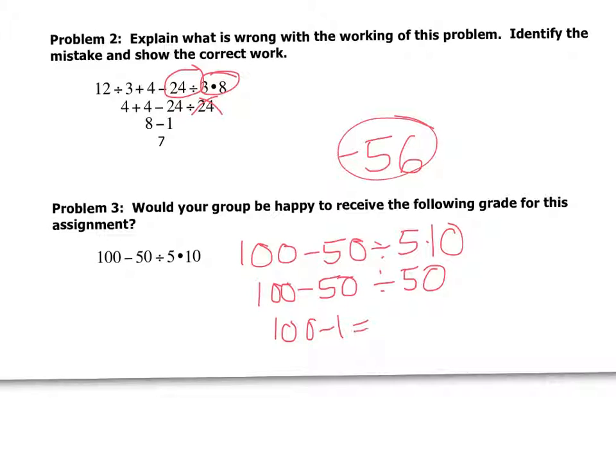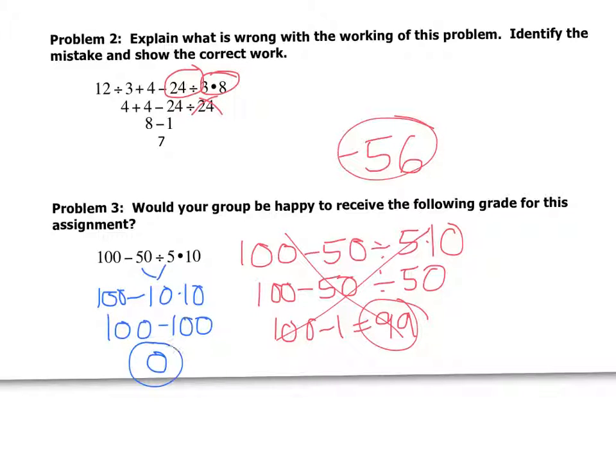I should be doing 50 divided by five. Negative 50 divided by five is negative 10. Then I do my multiplication, so I have 100 minus 100, and I really hope that you don't want a zero. If you do, we have some conversations to be had. So that's that.